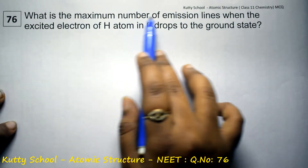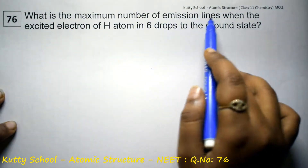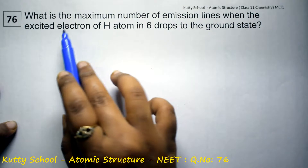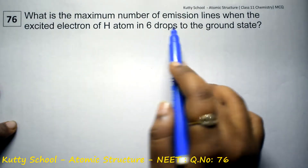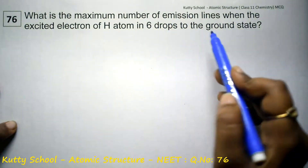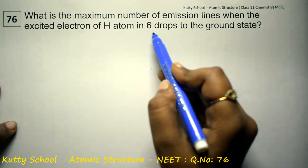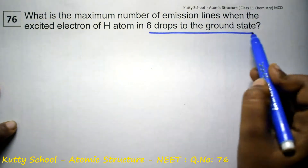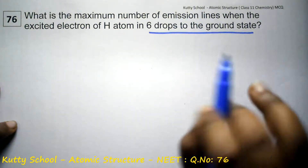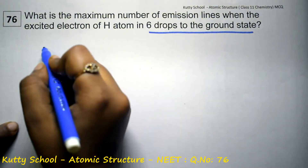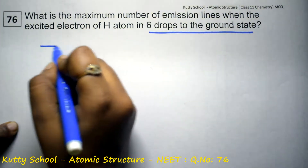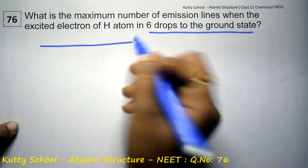What is the maximum number of emission lines when the excited electron of hydrogen atom in n=6 drops to the ground state? So, maximum number of emission lines — let's represent it on the diagram, it will be easier.